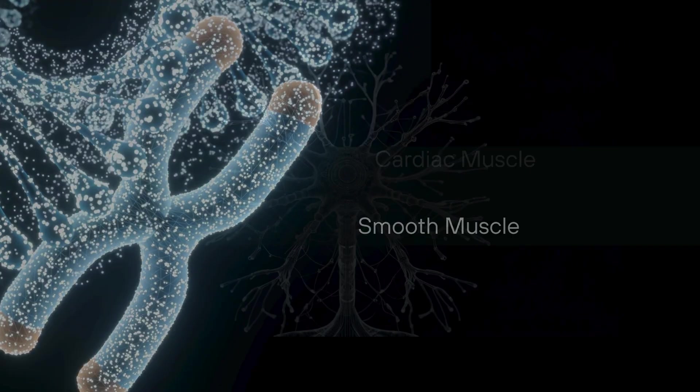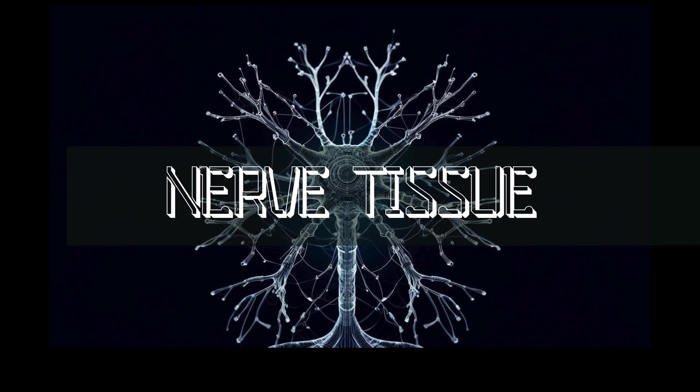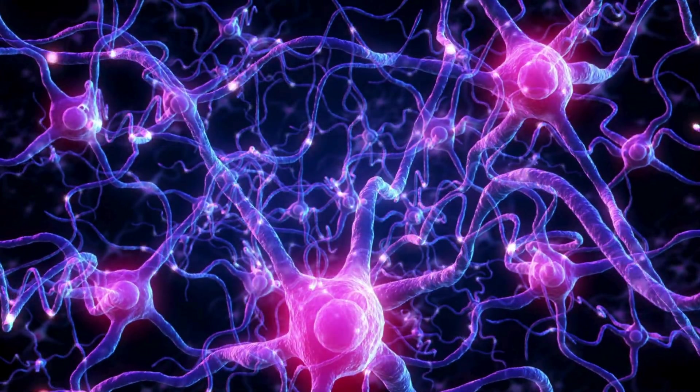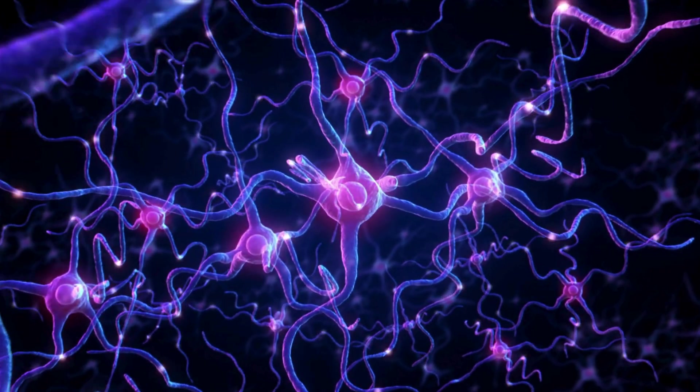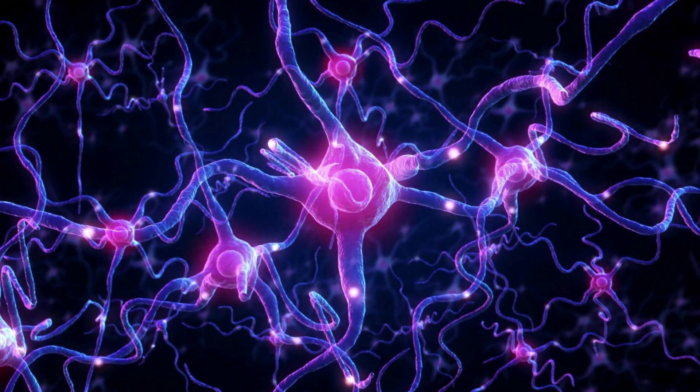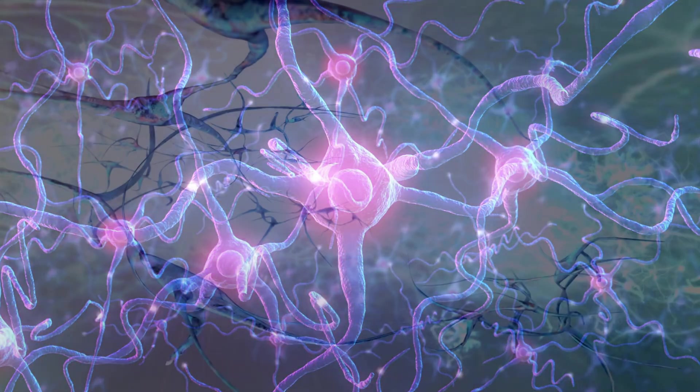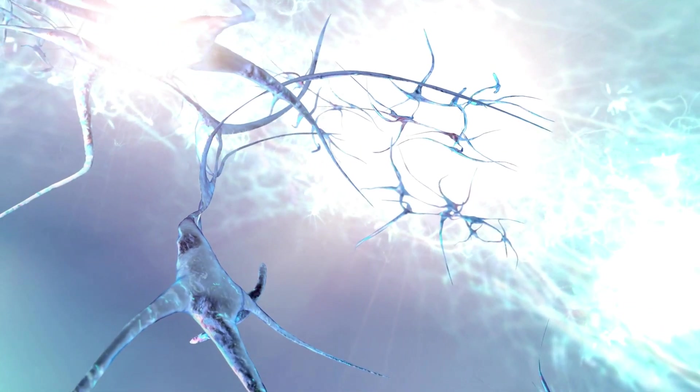Finally, to nerve tissue, the masterpiece of communication in our body. It consists of neurons and glial cells. Neurons are specialized for receiving, processing, and transmitting electrical signals, while glial cells support, protect, and nourish the neurons.